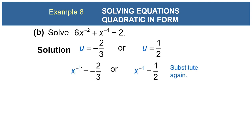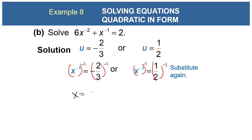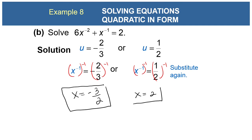Recall u = x^(-1). Replace u back: x^(-1) = 1/2 and x^(-1) = -2/3. Raise both sides to the -1 power, which is equivalent to taking the reciprocal: x = 2 and x = -3/2. Both solutions are good — double check in the original equation.